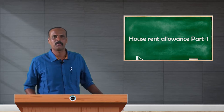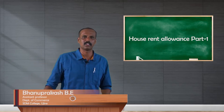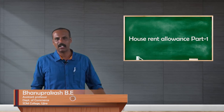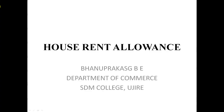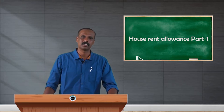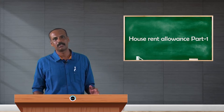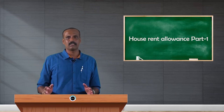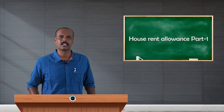Hello students, today we are going to discuss about house rent allowance. In the previous classes we have discussed a few exemptions under section 10, like agricultural income, share of profit from partnership firm, share of profit from HUF, commutation of pension, gratuity, and so on. Today we have to discuss about house rent allowance, because house rent allowance is exempt under section 10 subsection 13A.